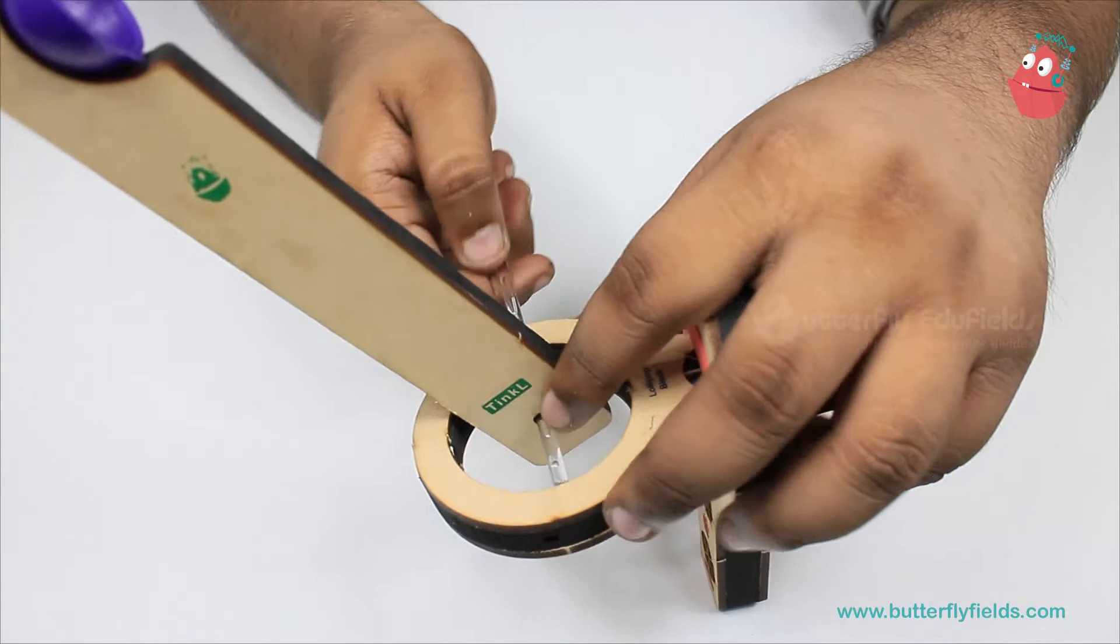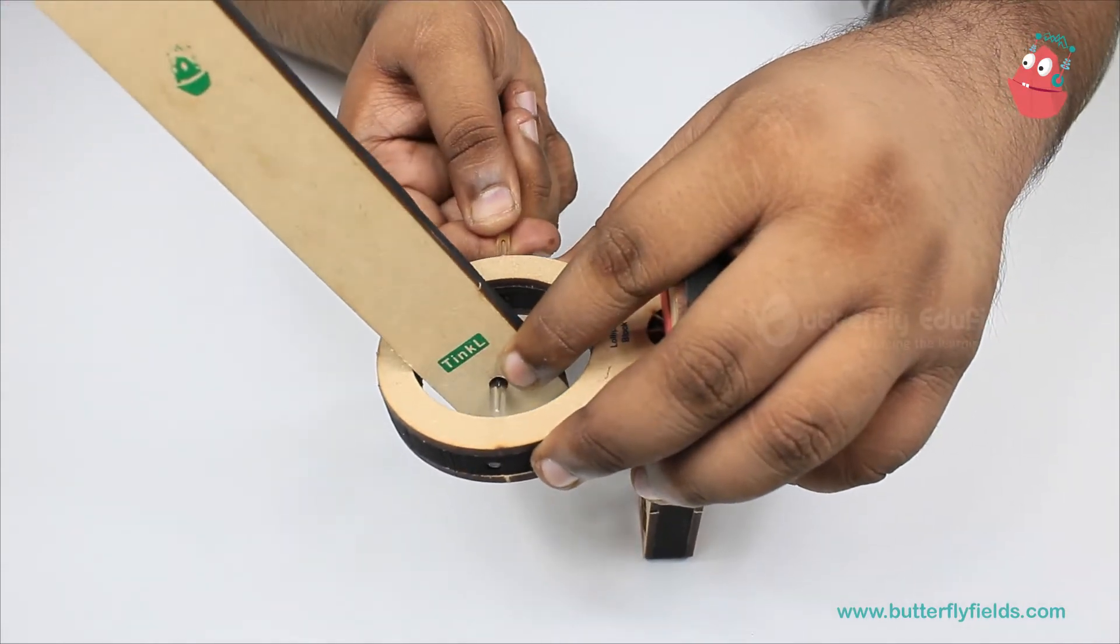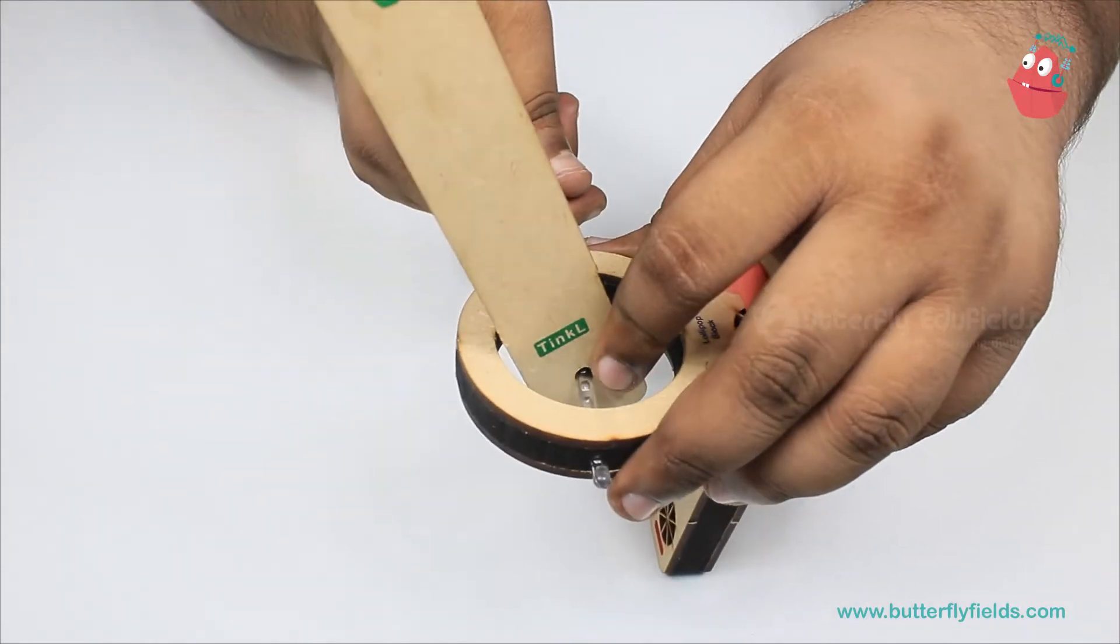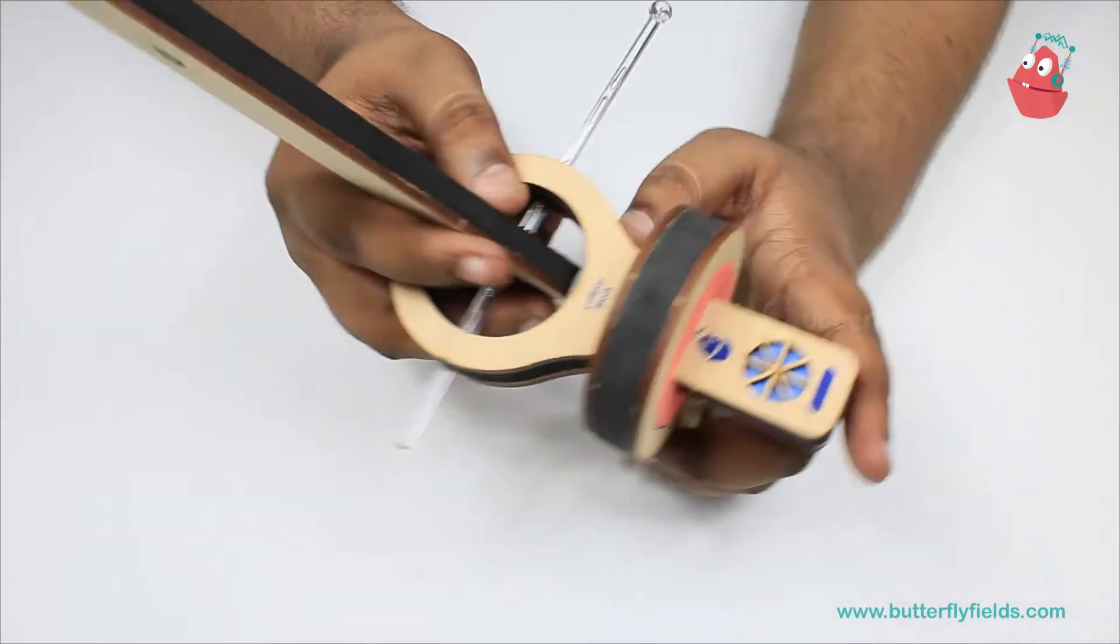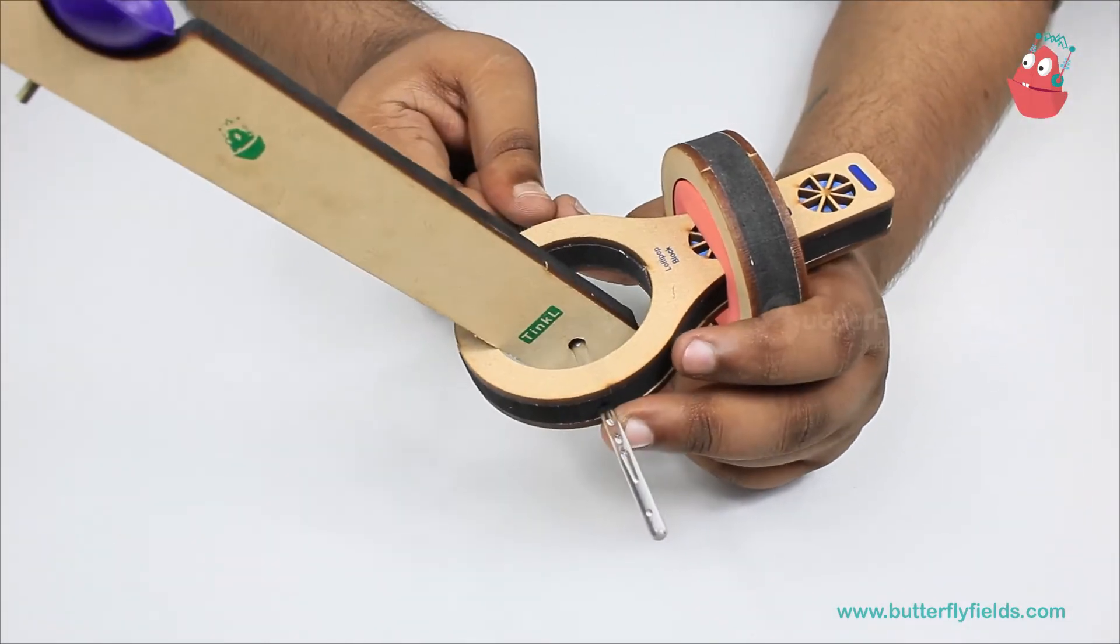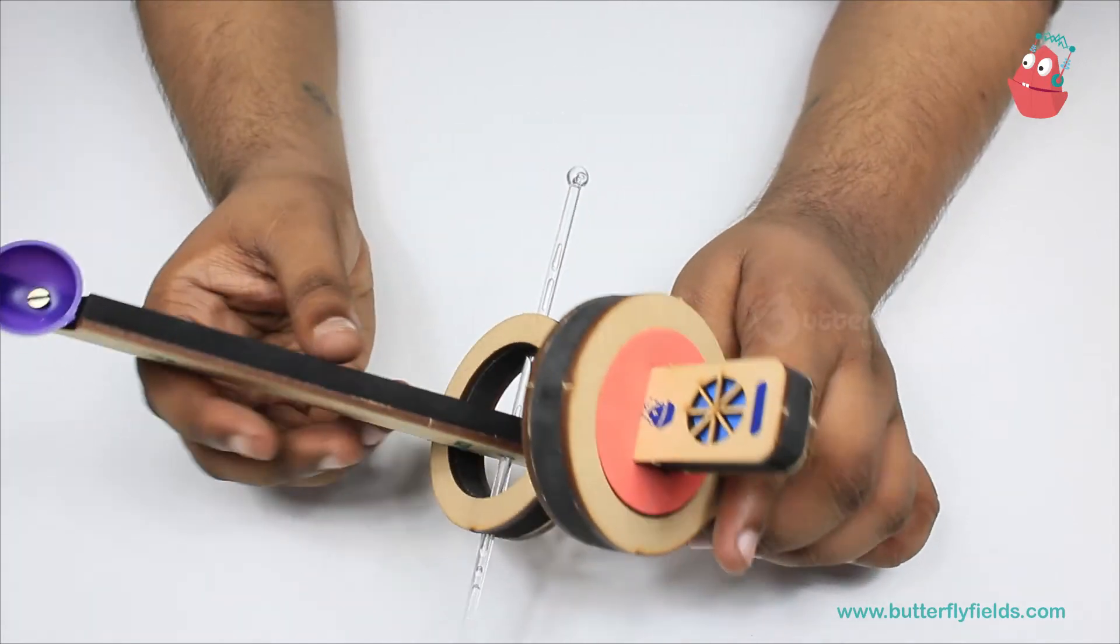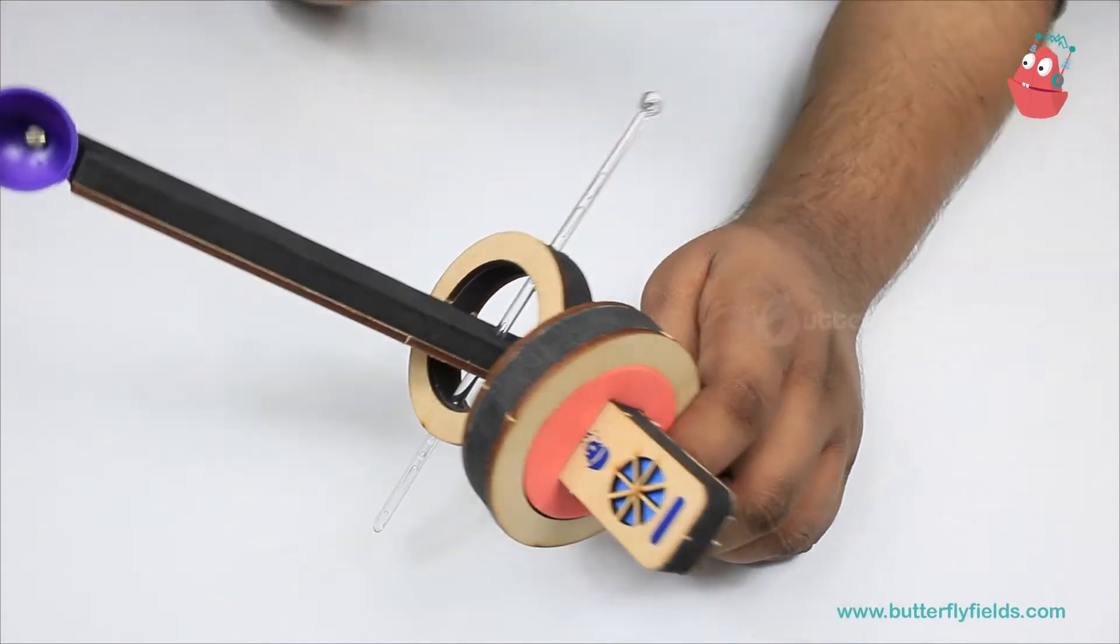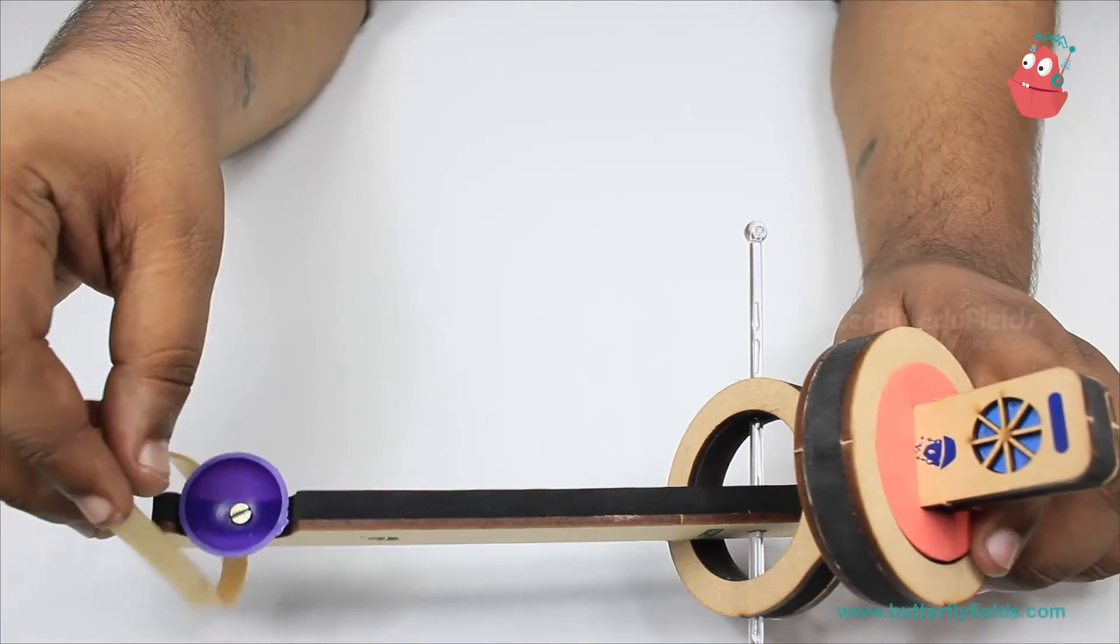And then through the other hole on the lollipop bit. Now we need to fit the elastic band. Insert it...